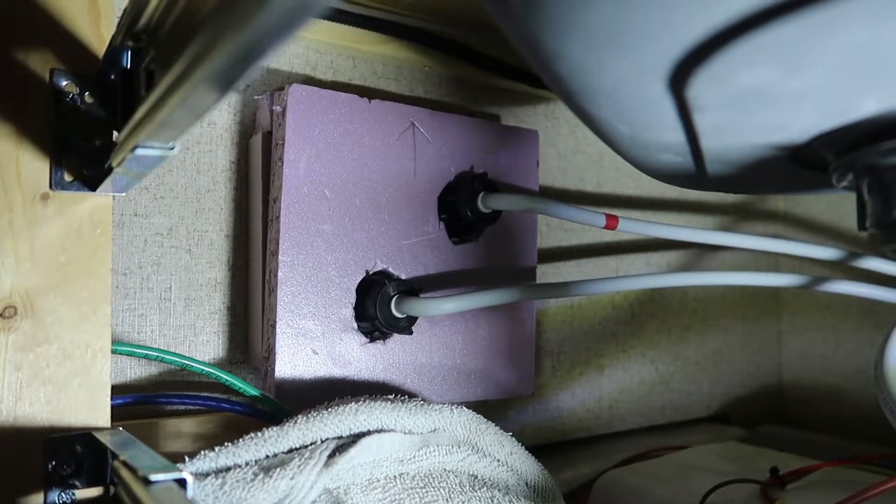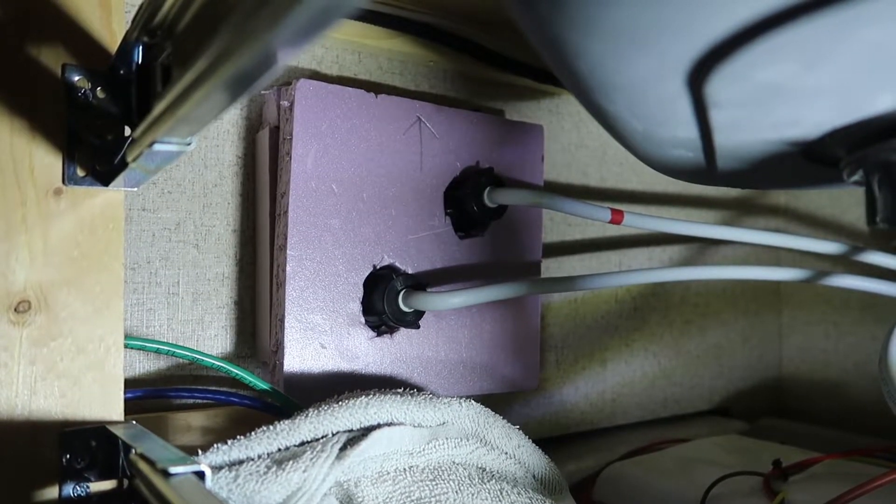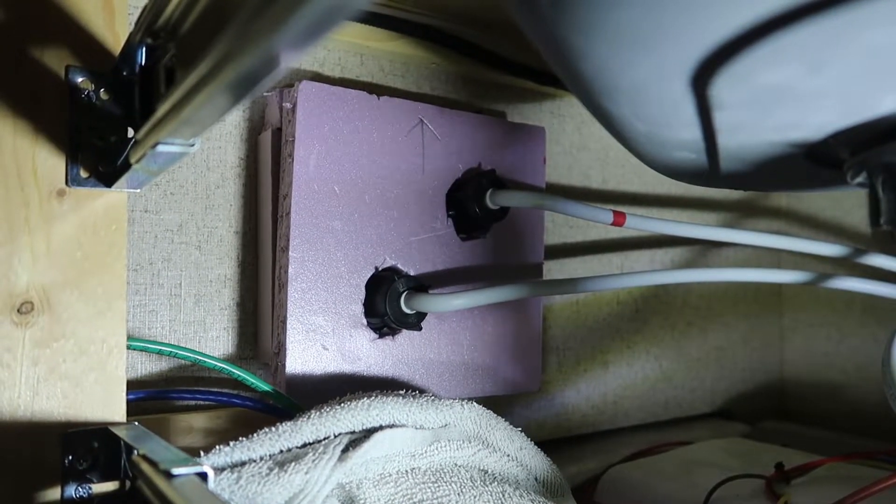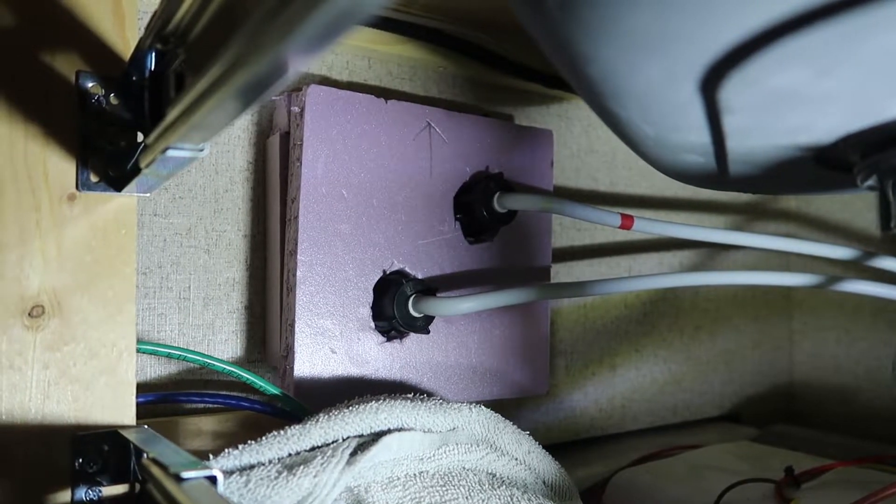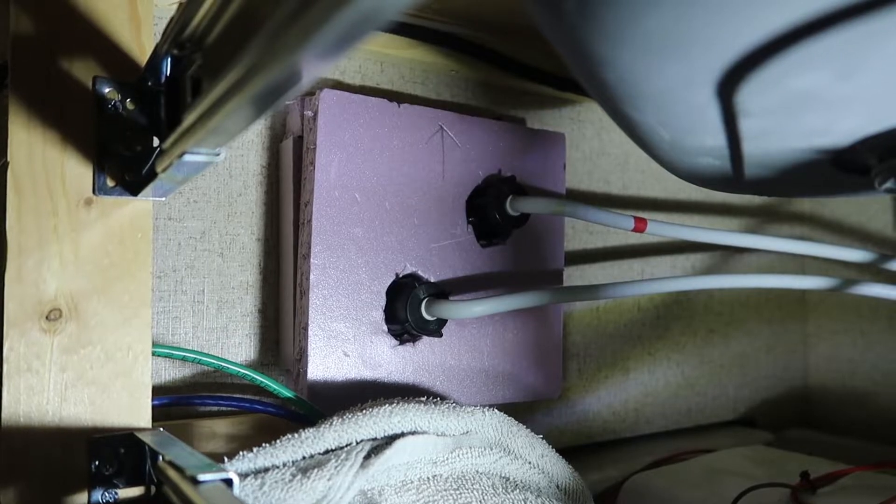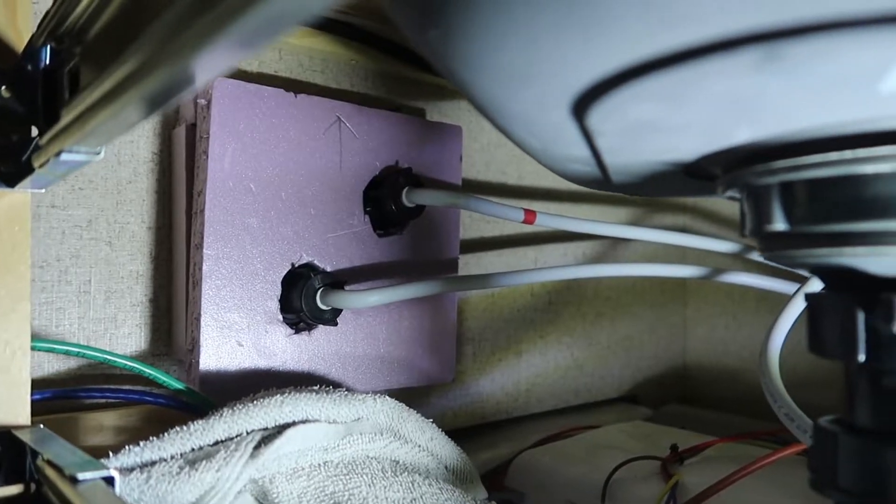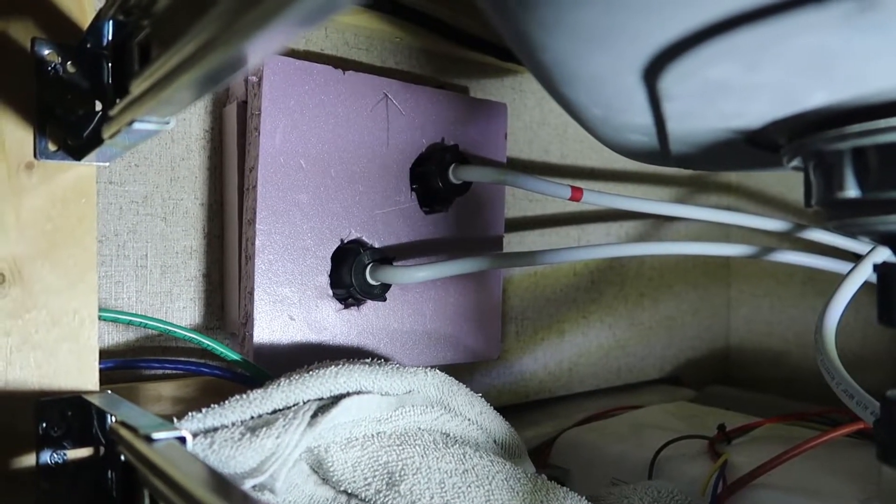And then I took four smaller pieces, probably about an inch to an inch and a half wide. Those thin narrow strips, I put a perimeter around the outside of the enclosure, and then that gave me a surface to attach my bigger square piece to.